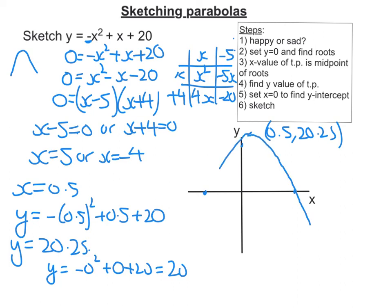So you can do it a lot more accurate than I can. So this is negative 4. That's 5. And this here, this point here, is 20. And that's my turning point there.